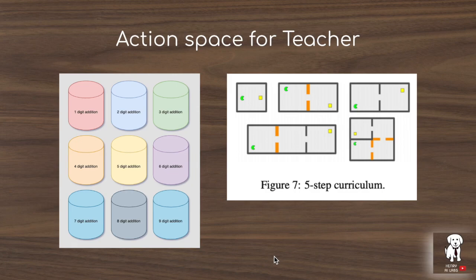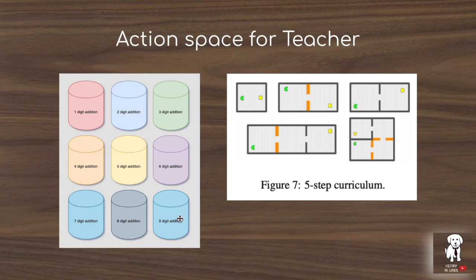The action space for the teacher network looks like an n-arm bandit problem, selecting different levers to pull in order to send tasks to the student and get back a reward signal. The reward signal is the student's improvement on the task the teacher sent. For example, if the teacher sends two-digit addition, the reward is based on how much the student improves from where it previously was on two-digit addition — not measured on the final task of nine-digit addition. This is the key difference between this paper and other curriculum learning work.